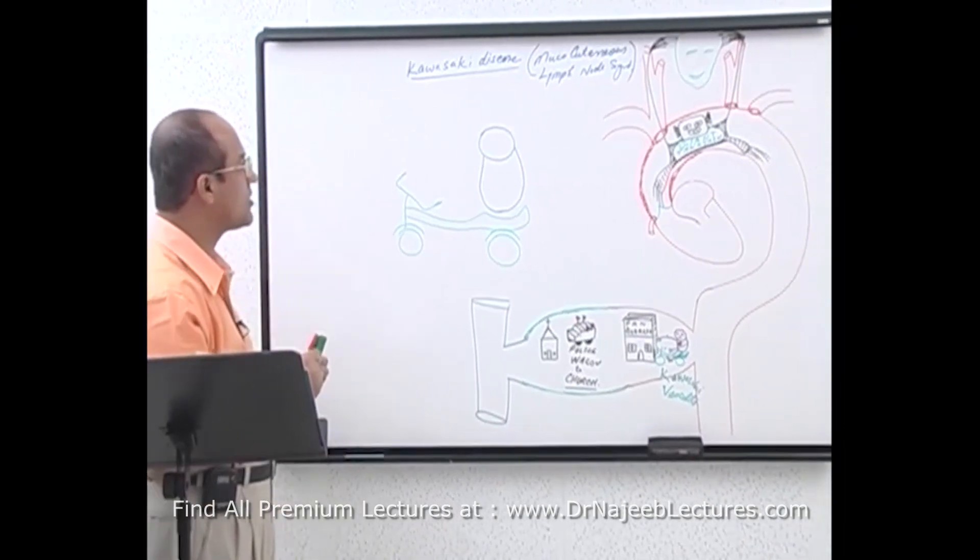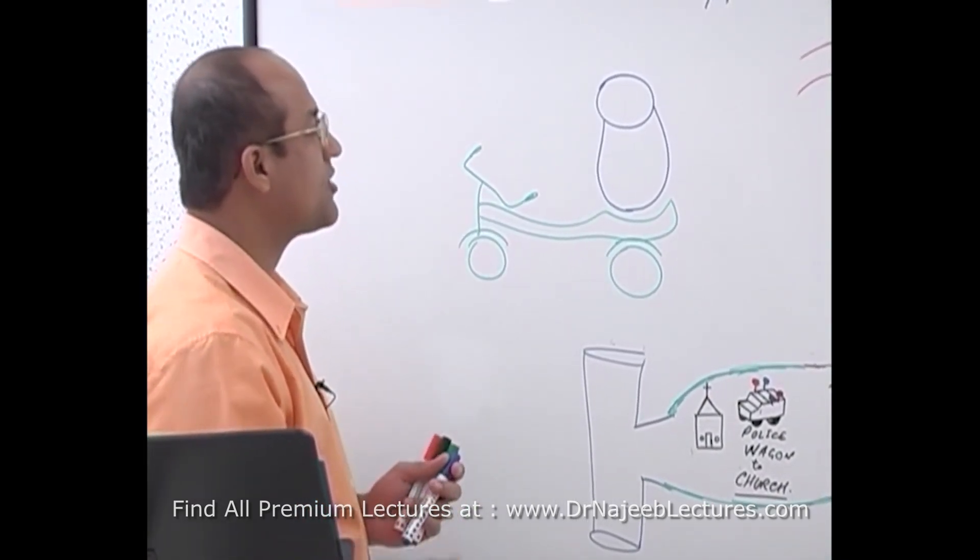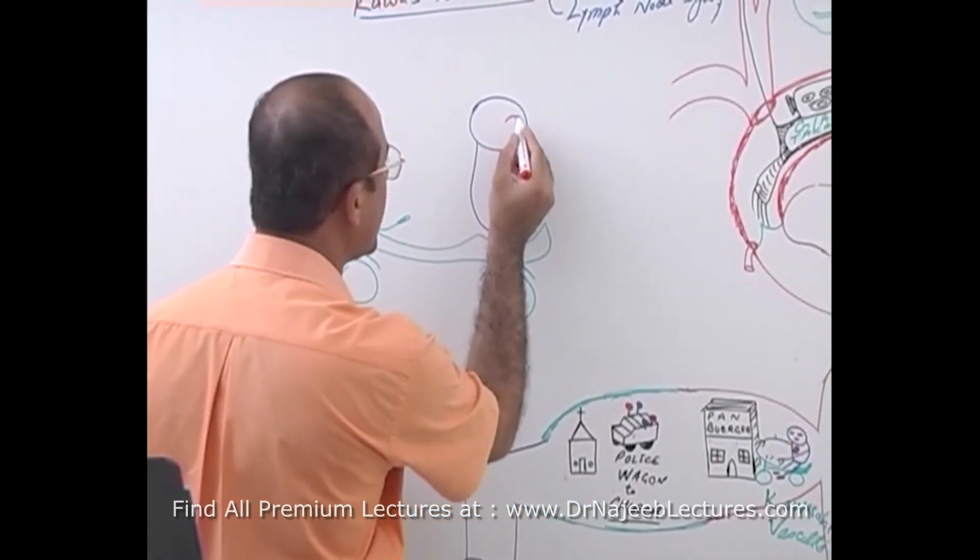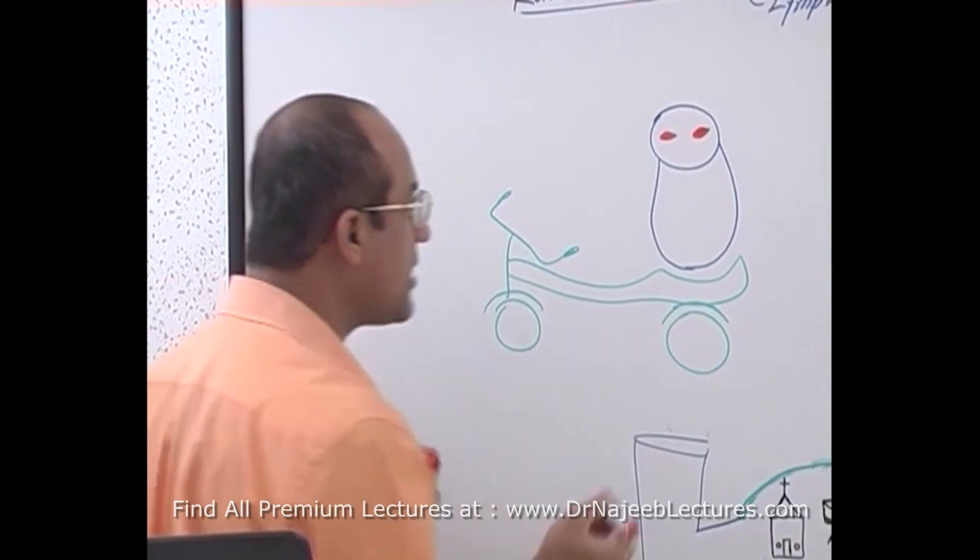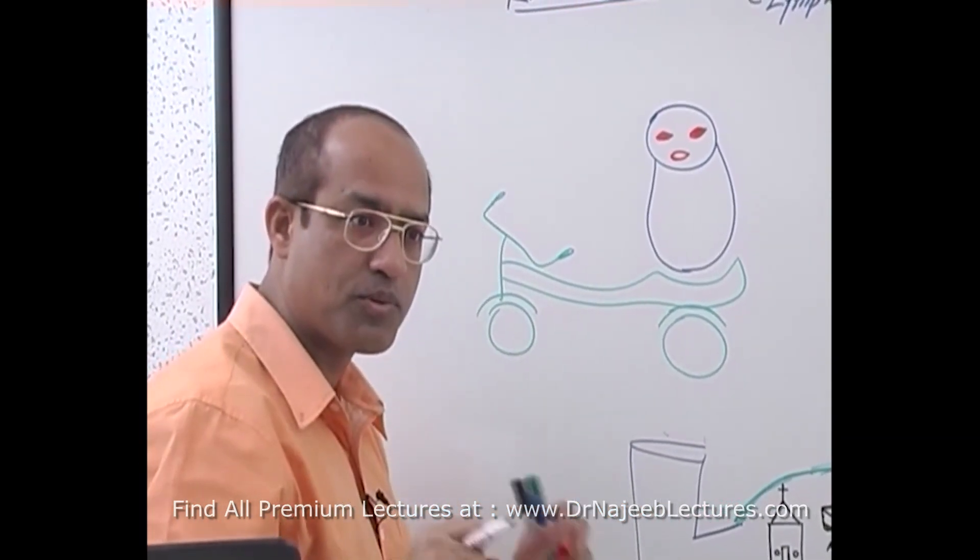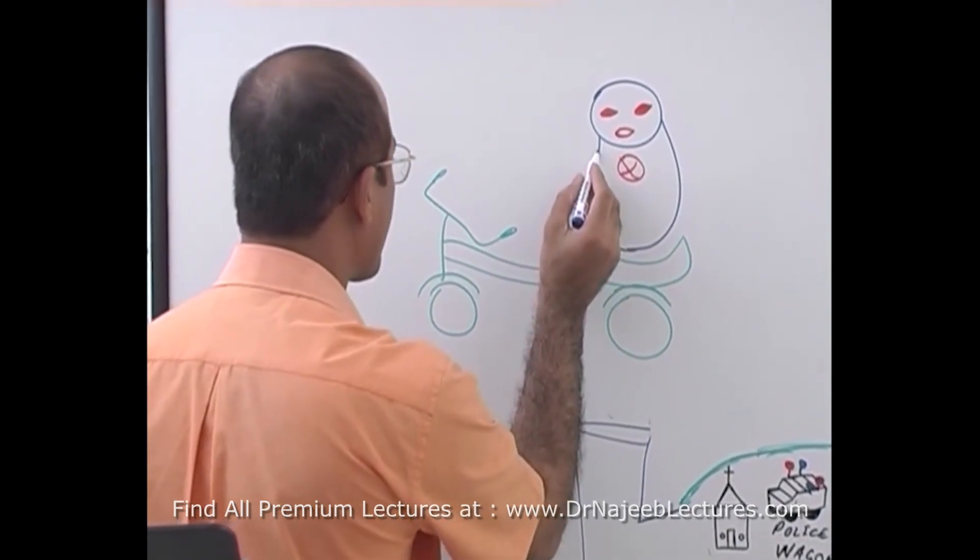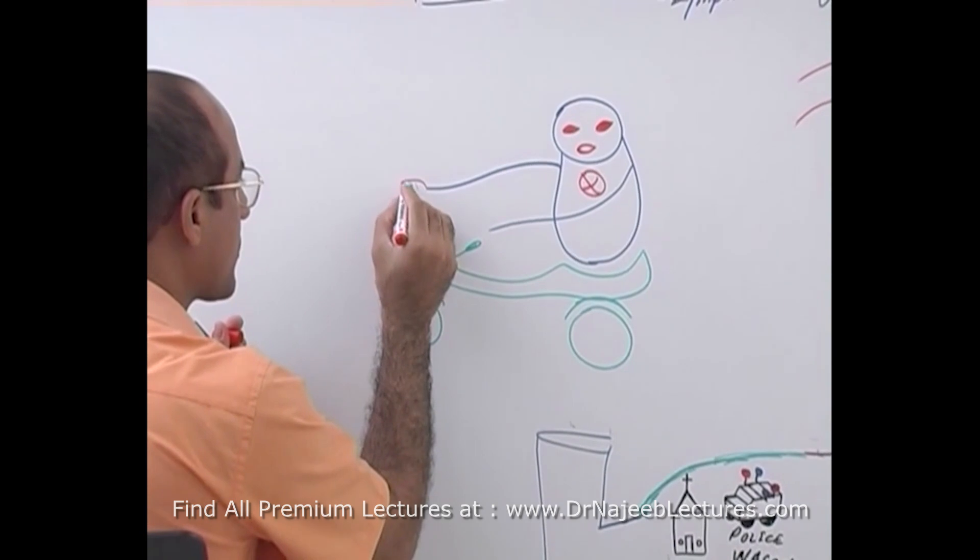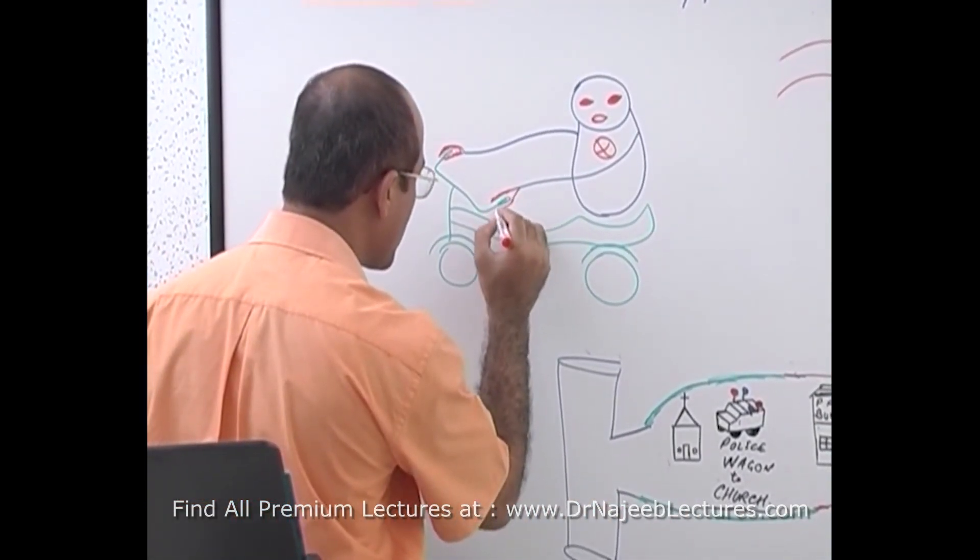Now in Kawasaki disease you can remember by this diagram there is a baby. Let's imagine there is a baby which is very young, maybe just three or four years old, sitting on a motorcycle and somehow gets the motorcycle at full speed. What will happen? Eyes of the baby will become red. You know they are very delicate conjunctiva and there is fast speed of the motorcycle. So eyes and conjunctiva become red. Baby is opening its mouth, so mouth is also red. And heart of the baby is sinking with full speed - cardiac complications are there. And his hands are also red.